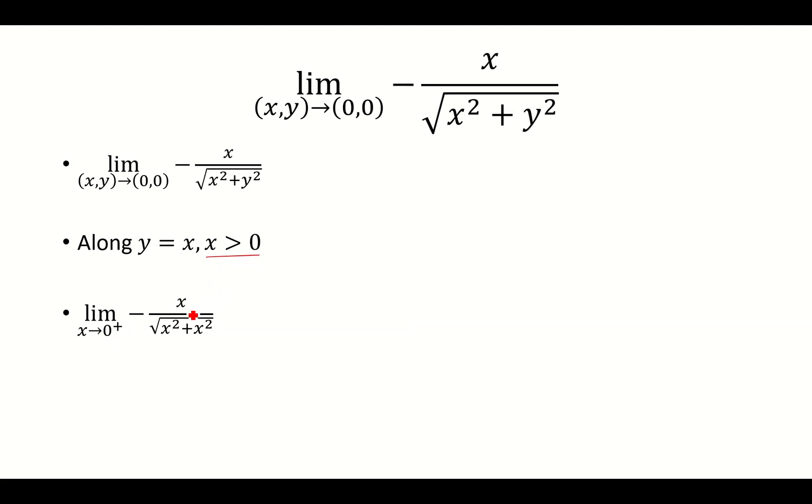We have negative x over the square root of x squared plus x squared. Add those to get 2x squared. And now because x is positive here, the square root of x squared will just be x, and that's going to cancel with the numerator, and we're left with negative 1 over root 2 as our limit.